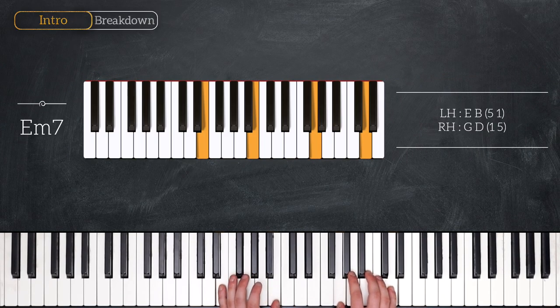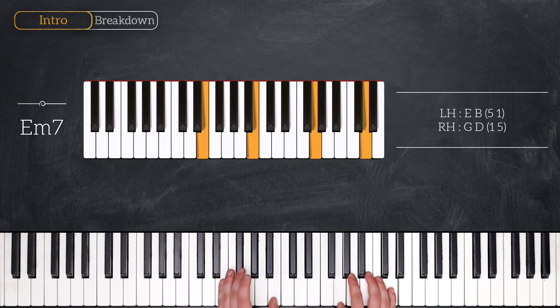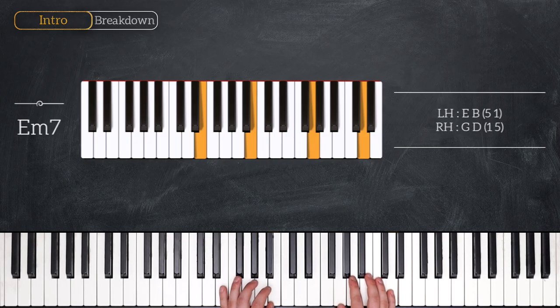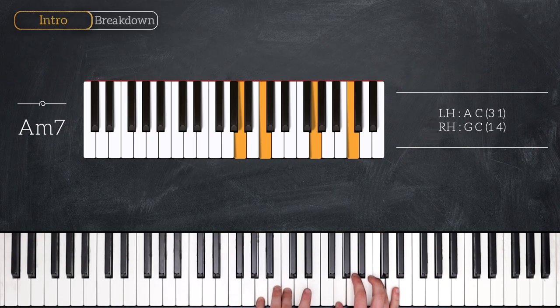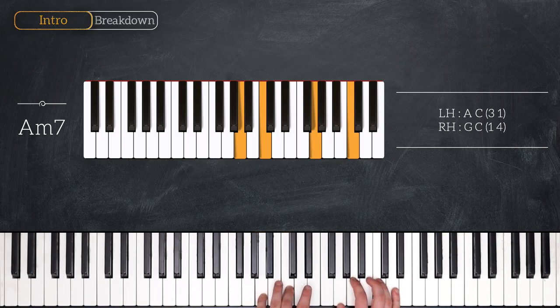Then we have E minor 7. In the left hand, E and B, and in the right hand G and D. Then we move to A minor 7. Left hand A, C, right hand G, C.